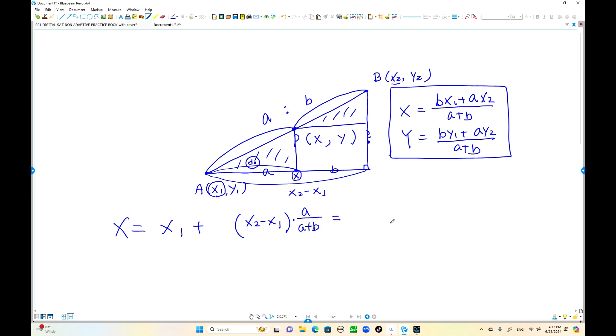x1 times A plus B is A x1 plus B x1, and plus A x2 minus A x1. A x1 is canceled out. We got over A plus B, B x1 plus A x2. Can you see that?